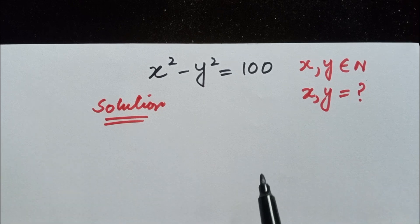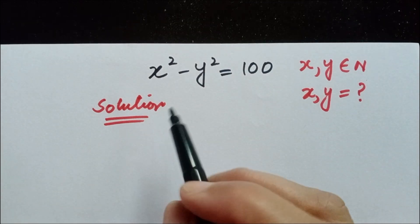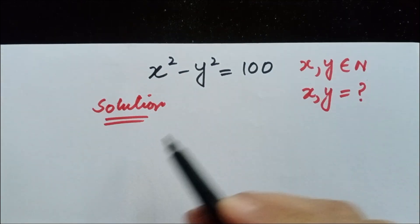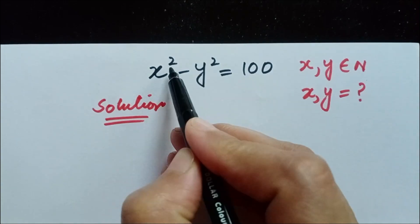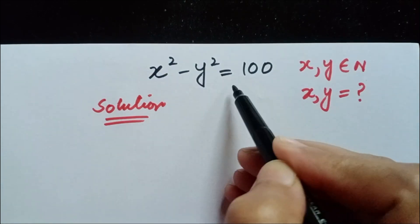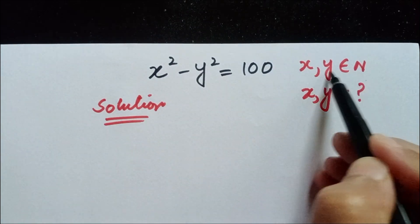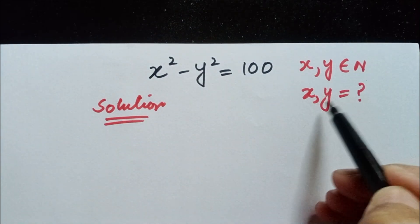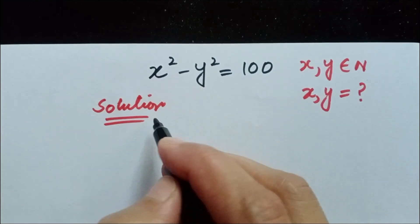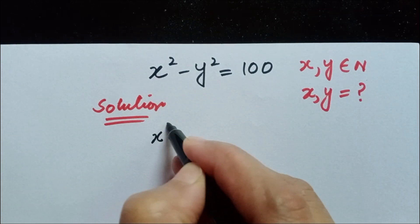Hi, welcome to Brain Equation. Today's question is x to the power 2 minus y to the power 2 is equal to 100, where x and y are natural numbers, and we are going to find out the values of x and y. So let's get started.